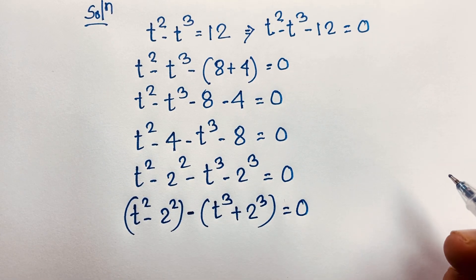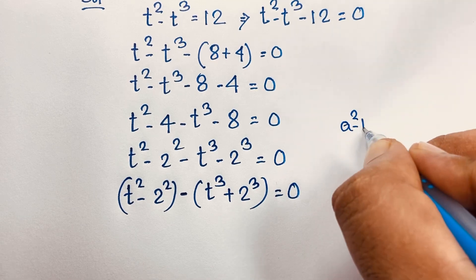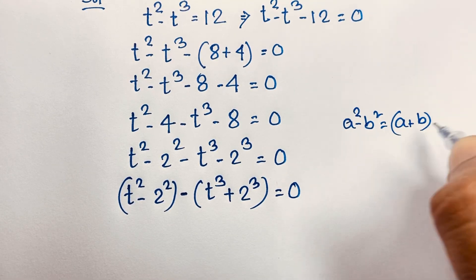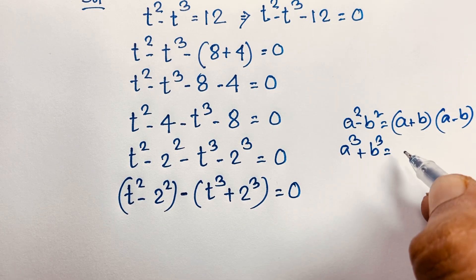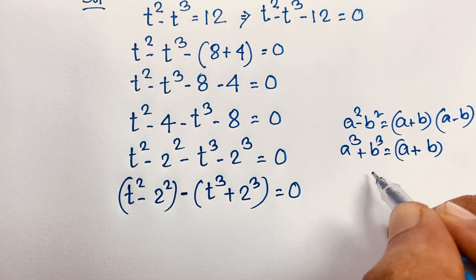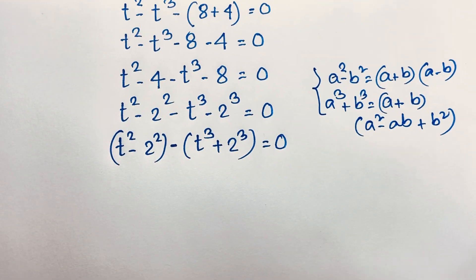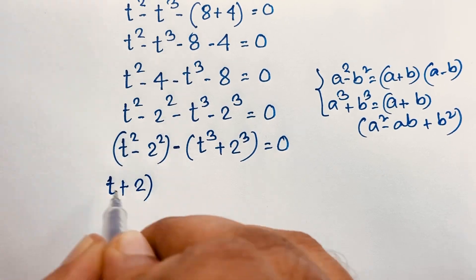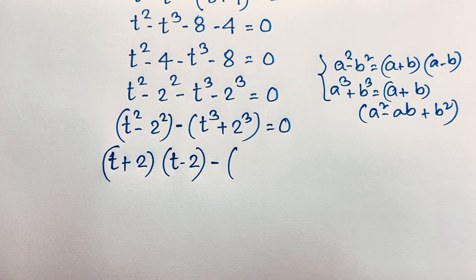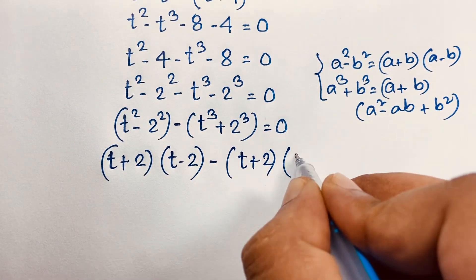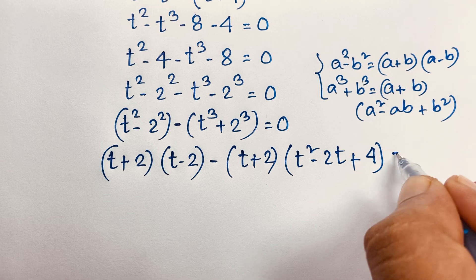Now I apply two formulas here. The first is a squared minus b squared, which equals a plus b times a minus b. The second formula is a cubed plus b cubed, which equals a plus b times a squared minus ab plus b squared. Applying both formulas: it will be t plus 2 times t minus 2, minus the sign, then t plus 2 times t squared minus 2t plus 2 to the power 2, which is 4, is equal to 0.